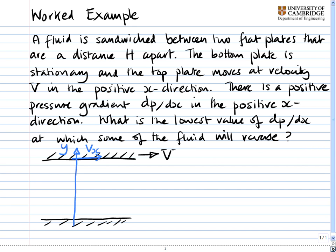This is going to be the velocity profile in the fluid. Because of the no-slip condition, at the top of the fluid where it hits the wall, that must be going at velocity big V. At the bottom of the fluid, the velocity must be equal to zero.